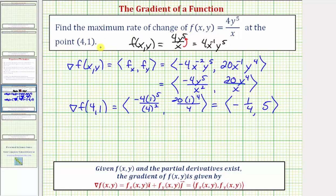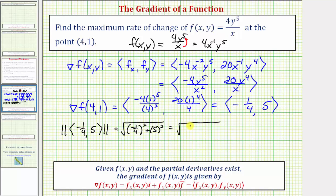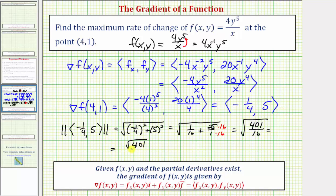The maximum rate of change at (4,1) equals the magnitude of the gradient. That is the square root of (−1/4)² + 5² = √(1/16 + 25). Finding a common denominator of 16: 25 = 400/16, so we have √(401/16). Since √16 = 4, the exact value of the magnitude is √401 / 4.